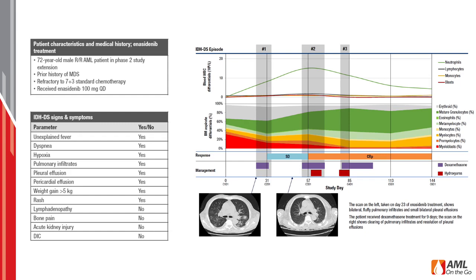A characteristic case of IDH differentiation syndrome is provided — in fact, several instances — in a patient on enasidenib. This is a 72-year-old male with relapsed refractory AML in the extension phase of the study, who was refractory initially to 7+3 standard induction chemotherapy and thereafter received enasidenib at 100 mg daily. The peripheral blood and bone marrow differentials during treatment show the patient had an increase in neutrophils by approximately the beginning of cycle 2, with the marrow revealing increasing formation of mature granulocytes, a decrease in myeloblasts, and achievement of complete remission by approximately 60 days following start of treatment.